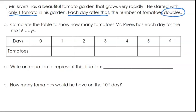Complete a table to show how many tomatoes Mr. Rivers has each day for the next six days. So that zero value, day zero, is going to be that starting value. He starts with one tomato. So we're going to start with one.